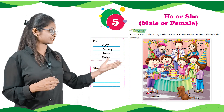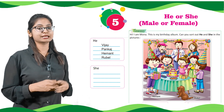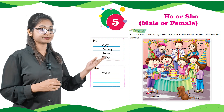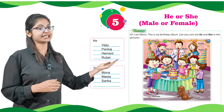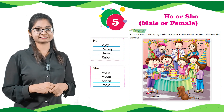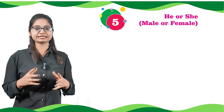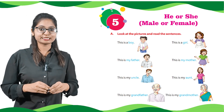And in the she section, we have given Mona, Meeta, Sarika and Pooja. The person who are female, such as your mom, your sister, your aunt etc., are considered as she. Let's move to Part A.